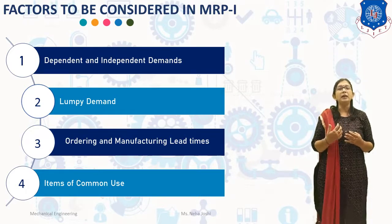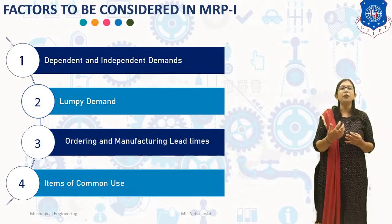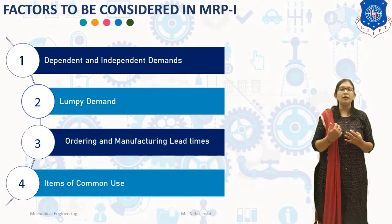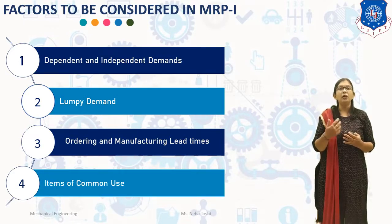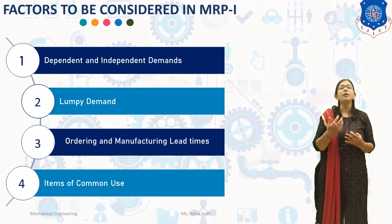Next is independent demand. Independent demand means the demand for item A is independent of the demand for item B. For example, the demand for spare parts is independent of the demand for the product. Therefore, in independent demand, as demands are not interrelated, it is necessary to separately forecast the demands.